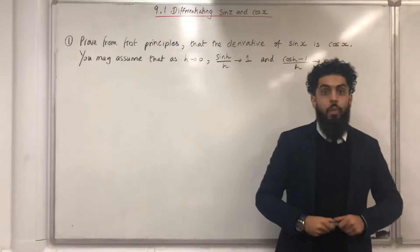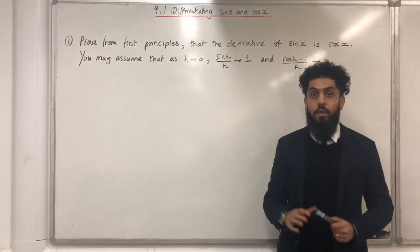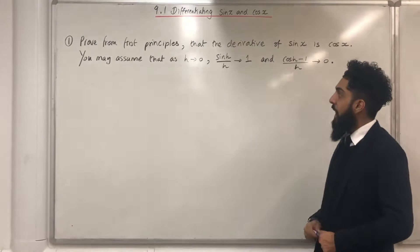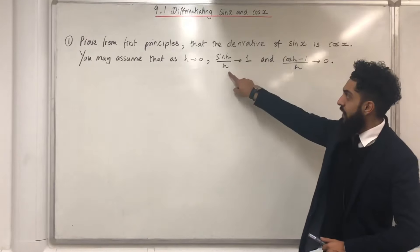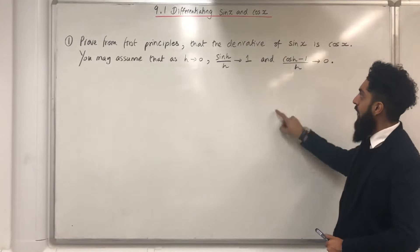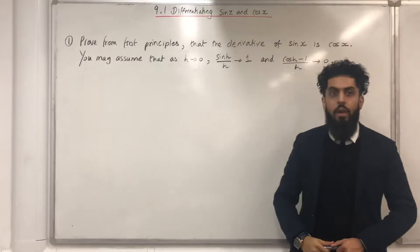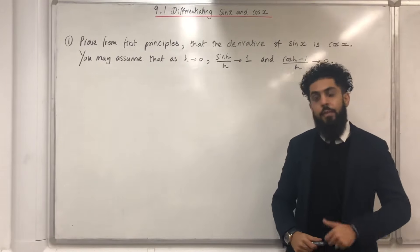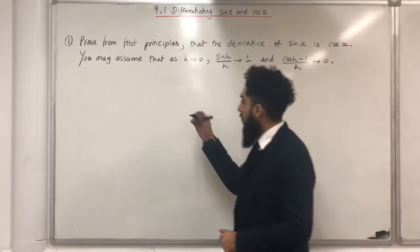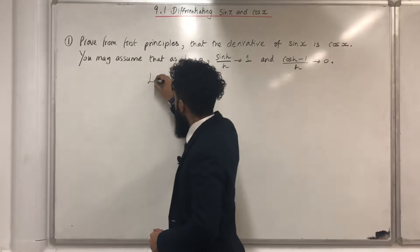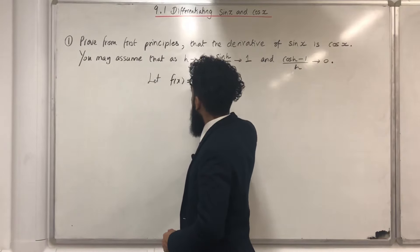Question number 1: Prove from first principles that the derivative of Sine X is Cos X. You may assume that as h tends to 0, Sine h over h tends to 1, and Cos h minus 1 over h tends to 0. The first step is to let f of x equal Sine X.